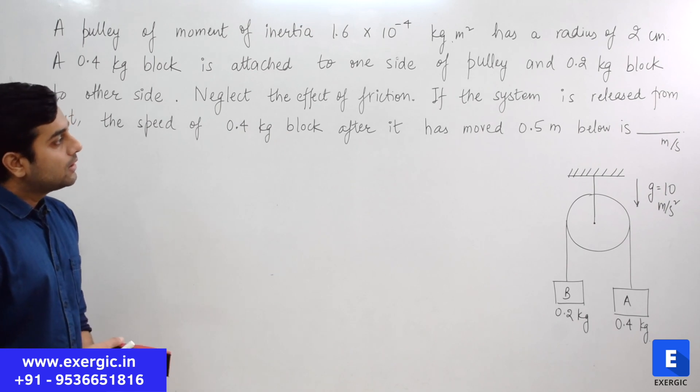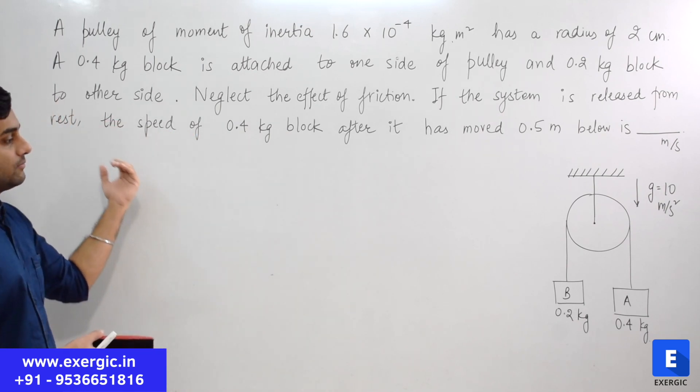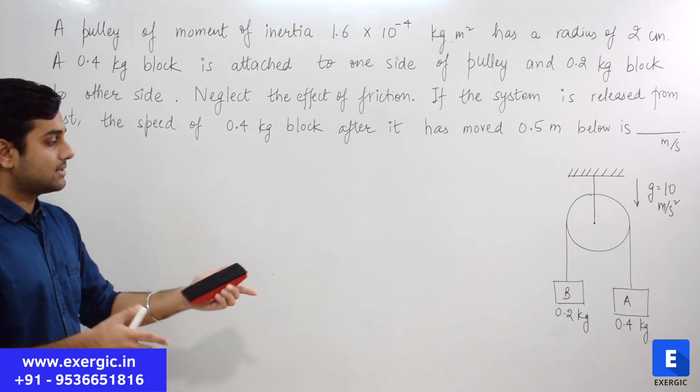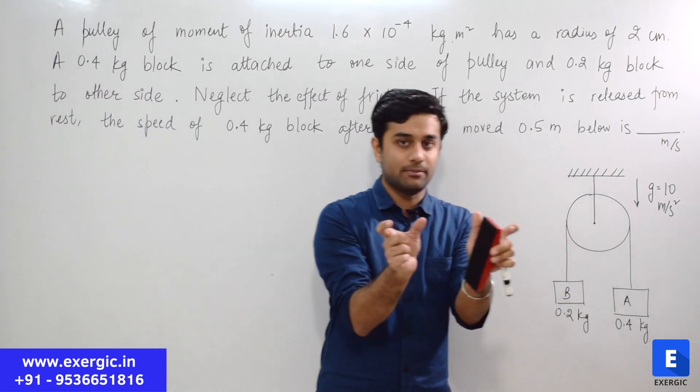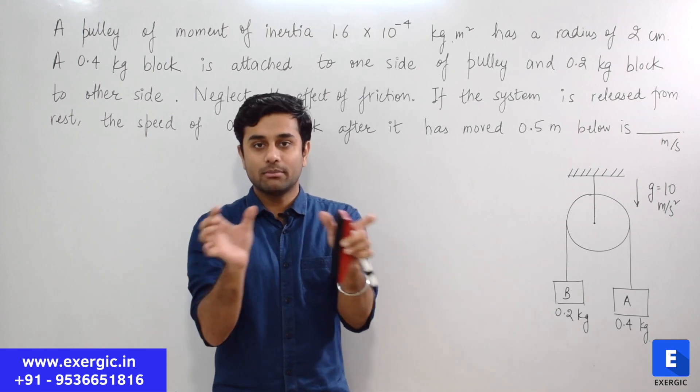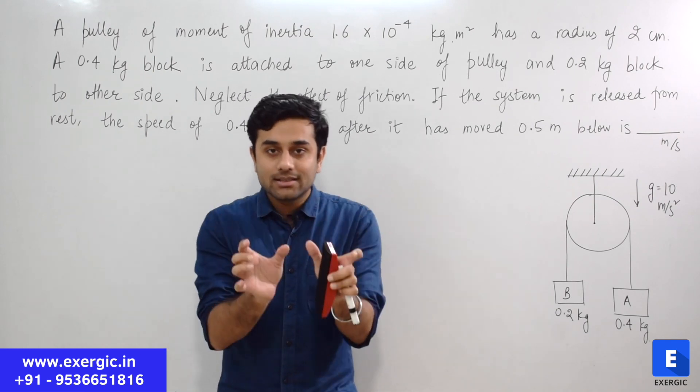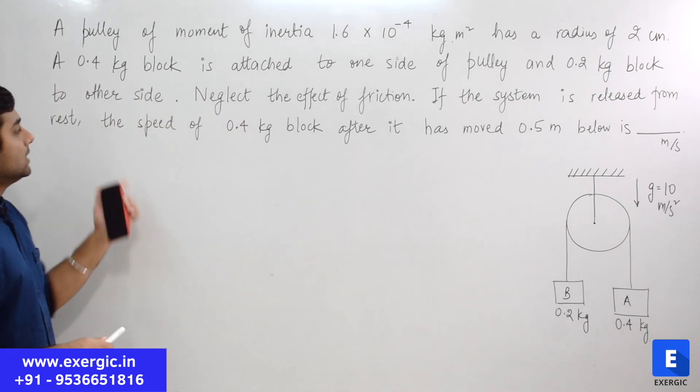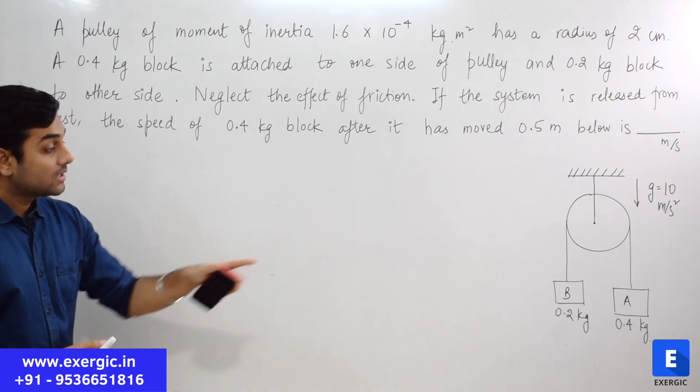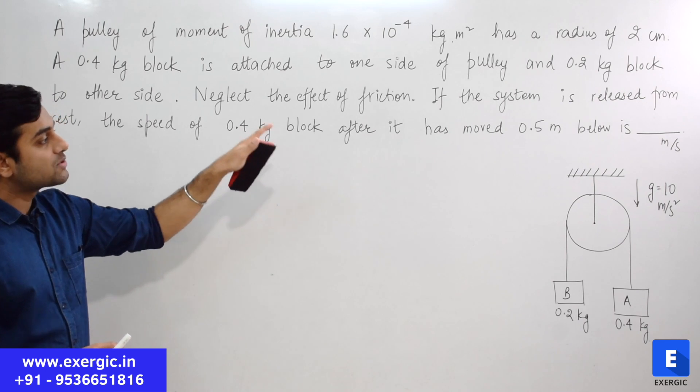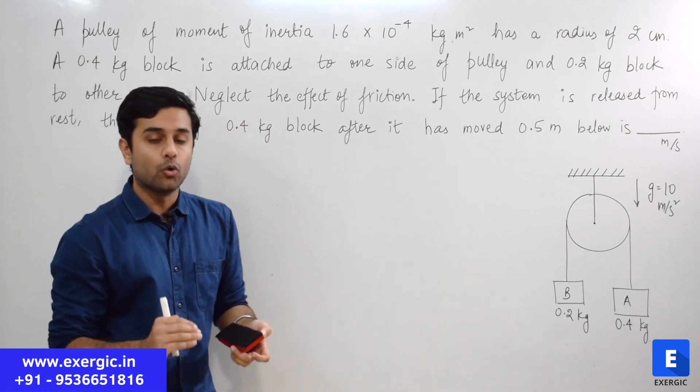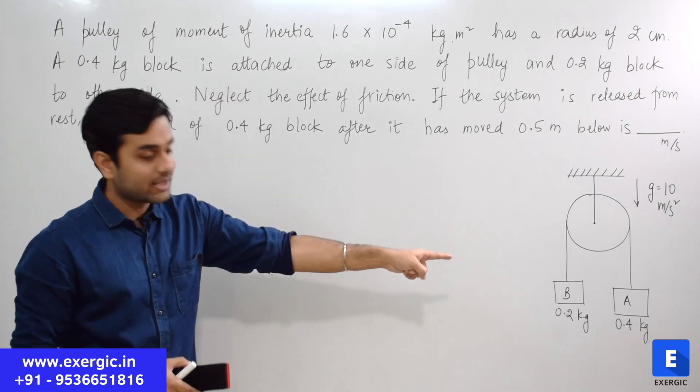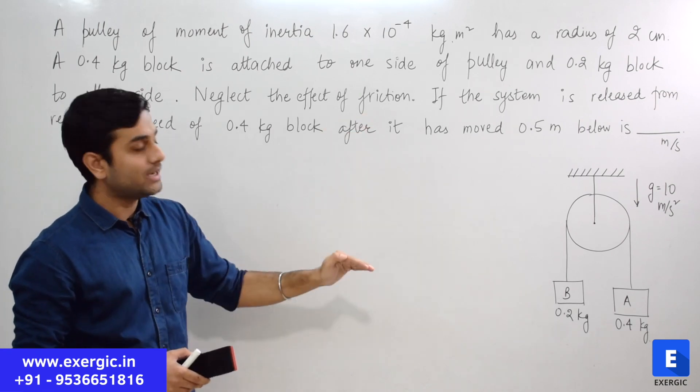A 0.4 kg block is attached to one side of pulley and 0.2 kg block on the other side. You can see there are two blocks A and B. A is 0.4 kg, B is 0.2 kg, both on the other side. Neglect the effect of friction. If the system is released from rest, so initially it is at rest. Basically you were holding these masses initially, not allowing free movement. But you released them and the system will move from rest to motion state.